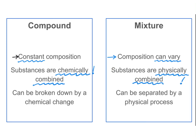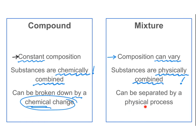When it comes to compounds, we can break them down to the elements from which they were created, or into simpler substances, through a chemical change. But it doesn't take a chemical change to separate things from a mixture — some physical process such as distillation or filtration will do the trick.